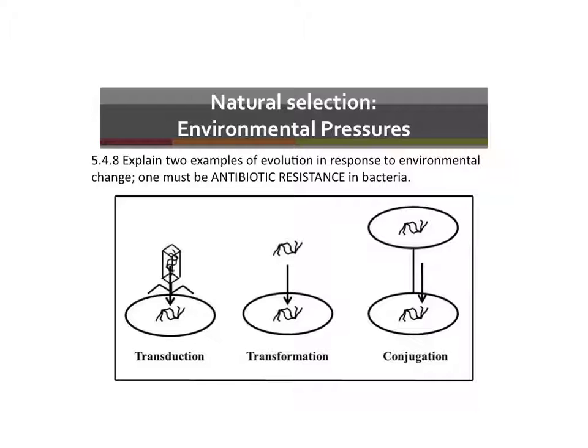The first mechanism is where a bacteriophage — a virus that attacks a bacteria cell — injects its DNA, and that DNA then becomes part of the bacteria's DNA or plasmids.